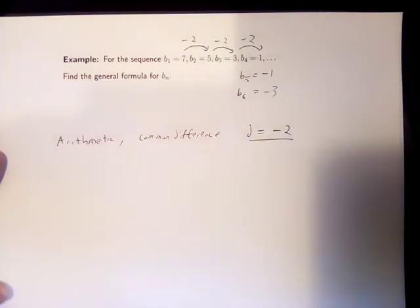The common difference is how much is added each time. So in this sequence, although you're probably thinking about it as subtracting 2 each time, you could also think about it as adding negative 2 each time.